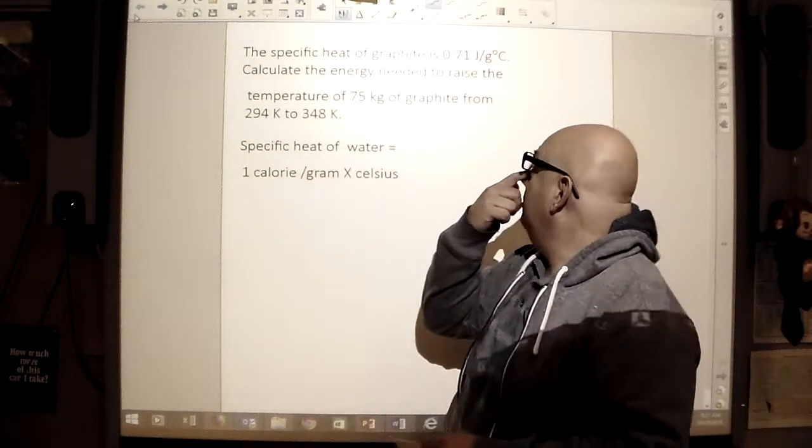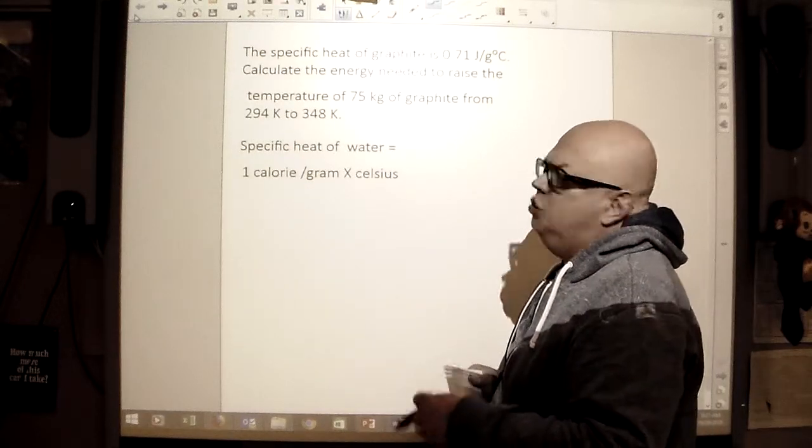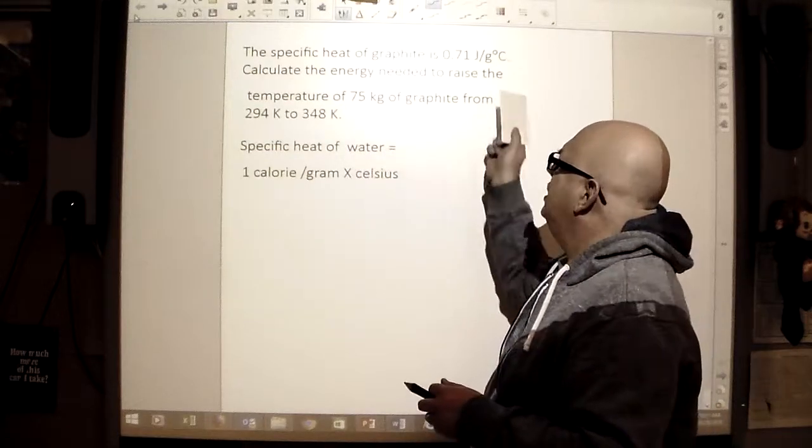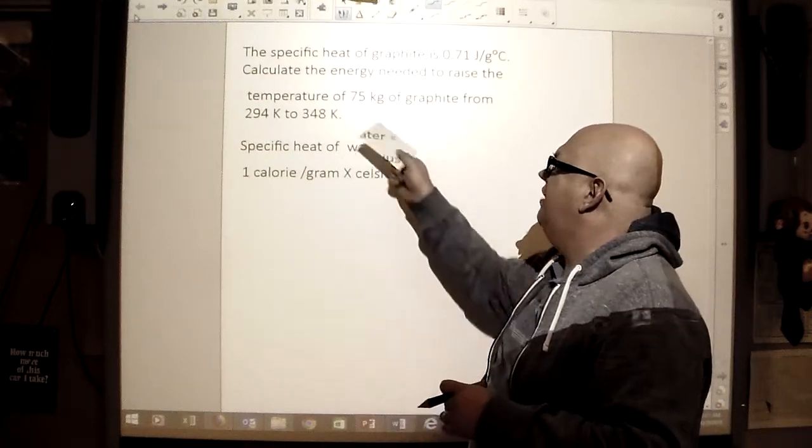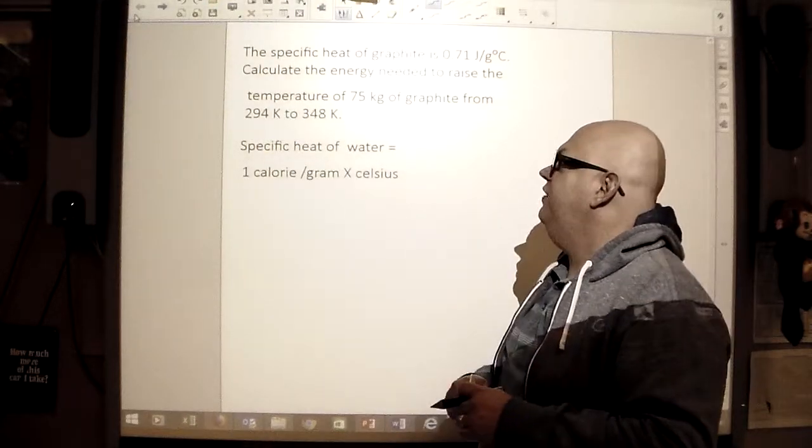Let's look at this problem here. The specific heat of graphite is 0.71 joules per gram times Celsius. We're going to calculate the energy needed to raise the temperature of 75 kilograms of graphite from 294 K to 348 K.